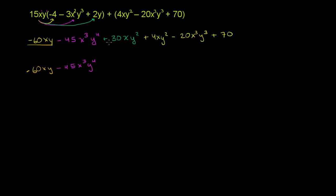Negative 45 x to the third y to the fourth power. And then we have 30xy squared. So do we have anything to combine it with? Well, we have an xy squared here. So we have 30xy squareds, and we can add another four xy squareds over here. So these are like terms.